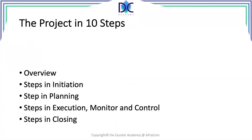In the previous session I described the project management process as it is described in the PMBOK. In this section I will describe 10 steps that you can follow to initiate, plan, execute, and close a project and repeat success. The 10-step approach is a simple guide that you can use, but you have to be aware that not all elements and processes as described in the PMBOK are included in these steps.